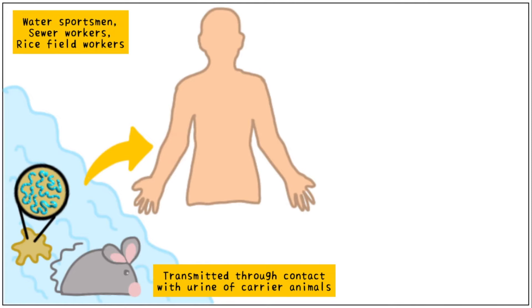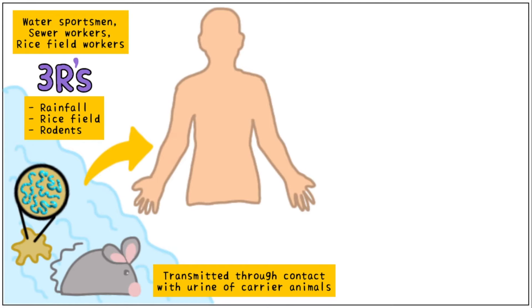Water sportsmen, sewer workers, and rice field workers are at high risk of contracting this infection due to the large time they spend in the water. The three R's you should associate with Leptospirosis are: rainfall, rice fields, and rodents or rats.